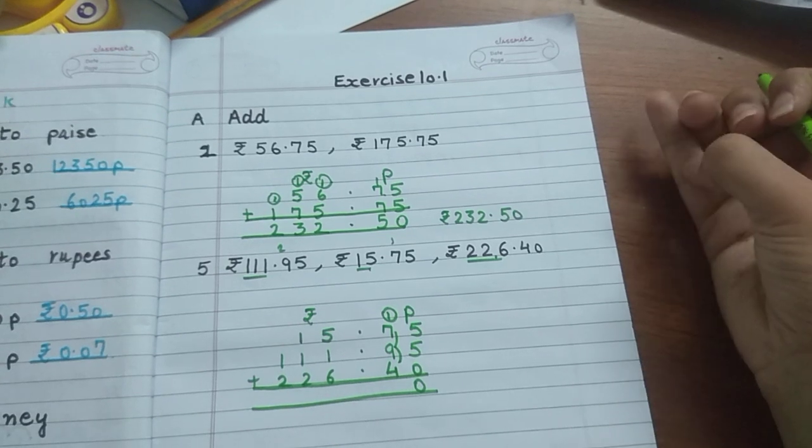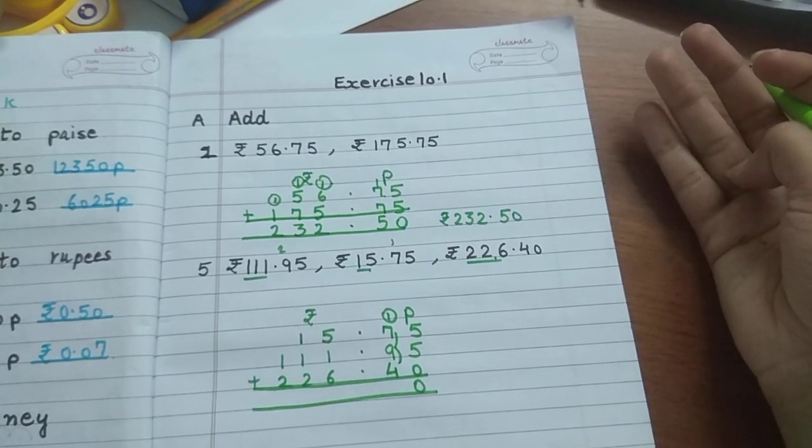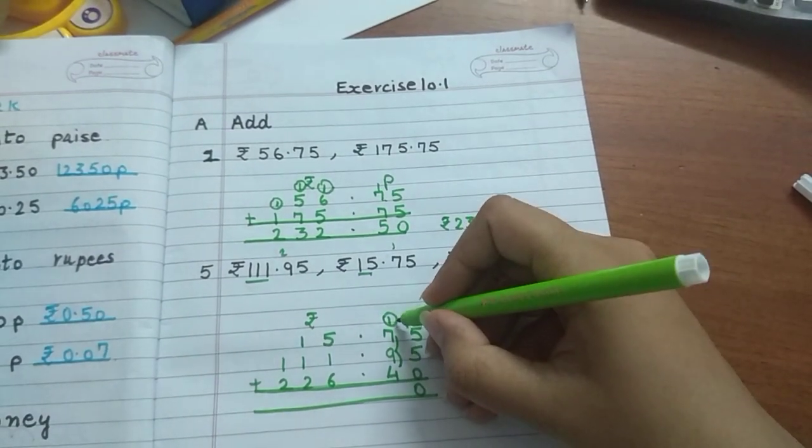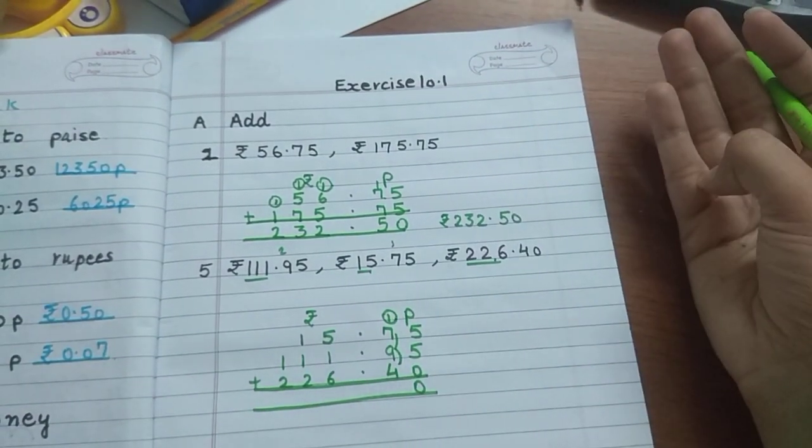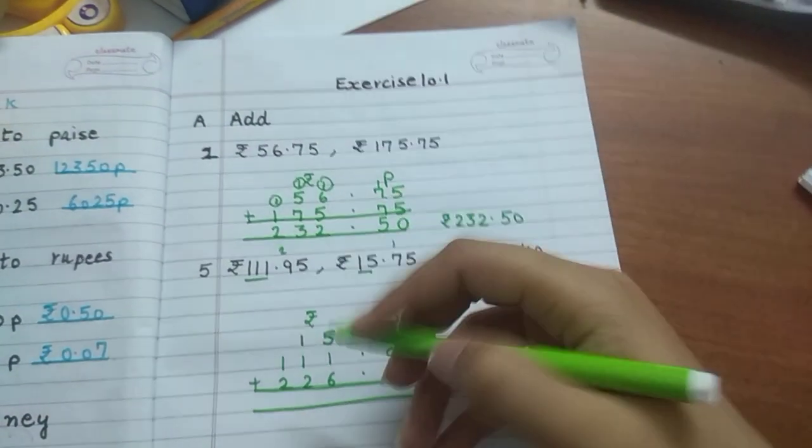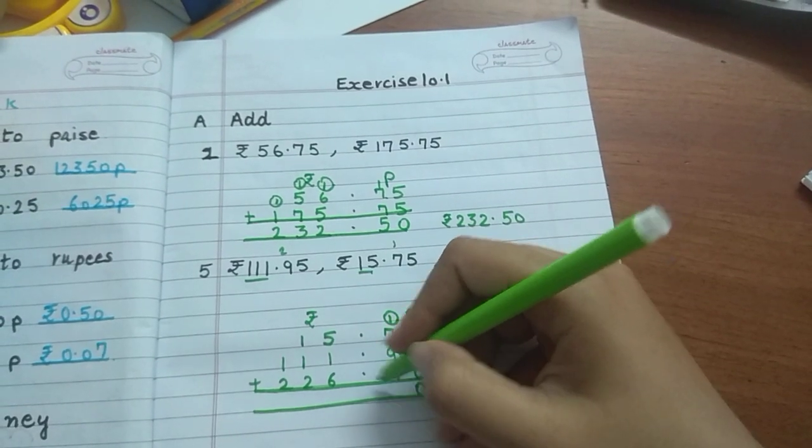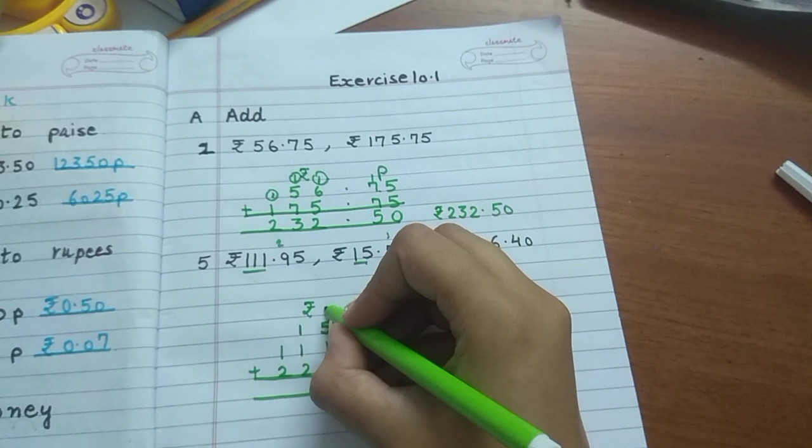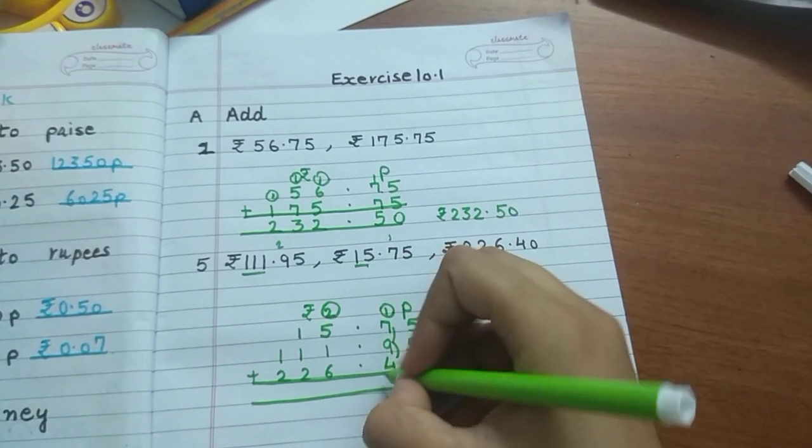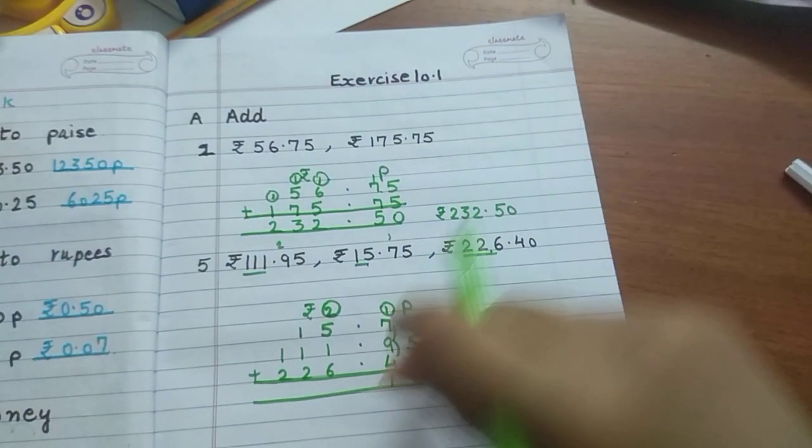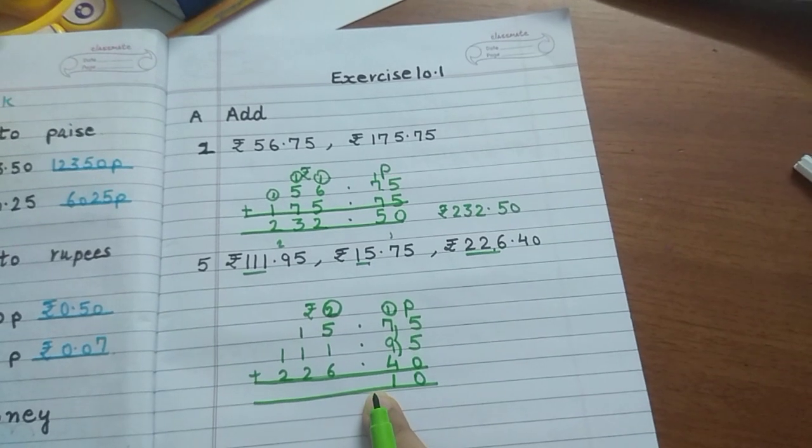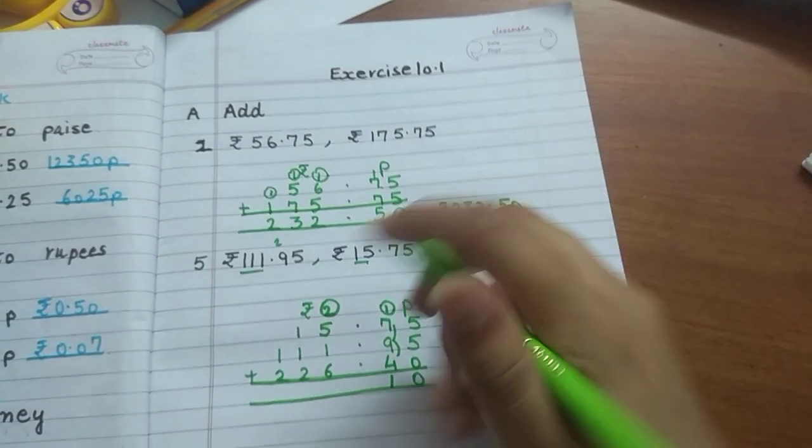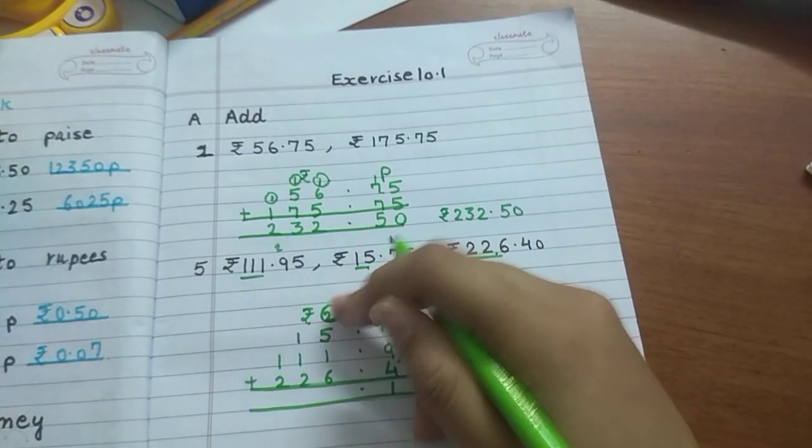20 plus 1 is 21. 21 will not go here, there is no place for 21 to sit. 2 goes up, 1 stays down. Decimal. 2.